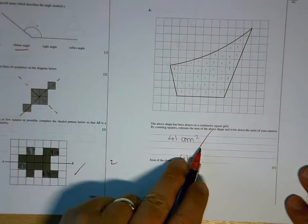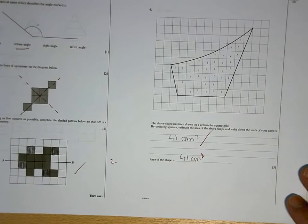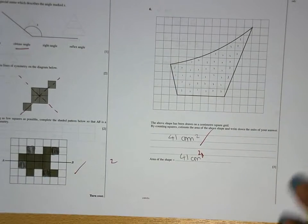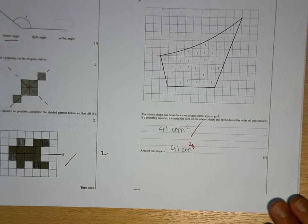41cm squared is correct, so why, down here, have you missed out the two? Okay, that's just carelessly throwing away marks.